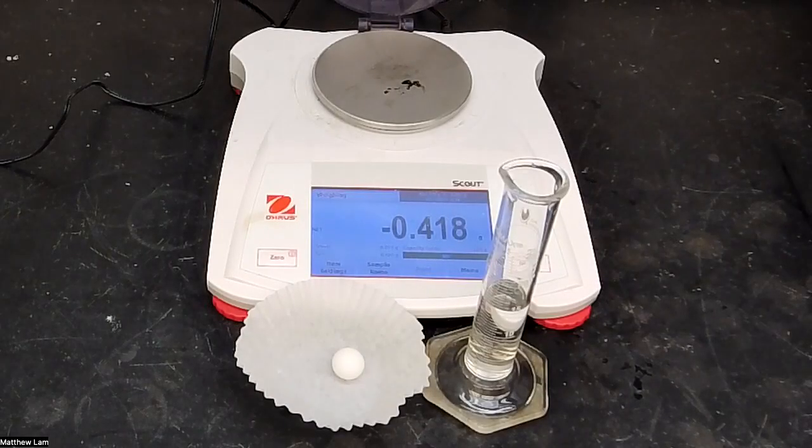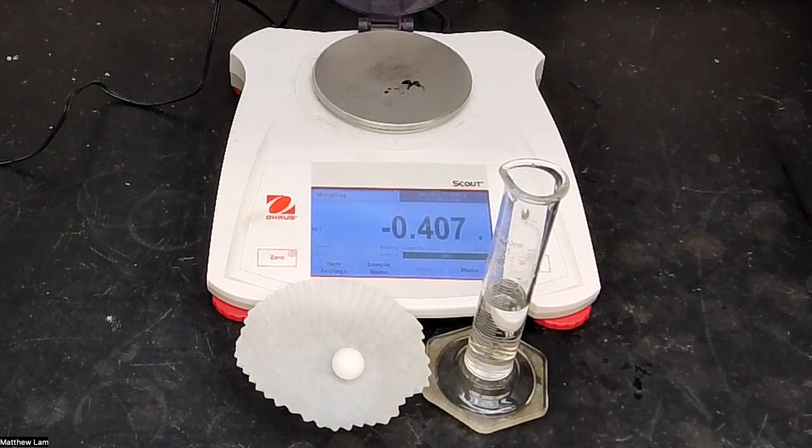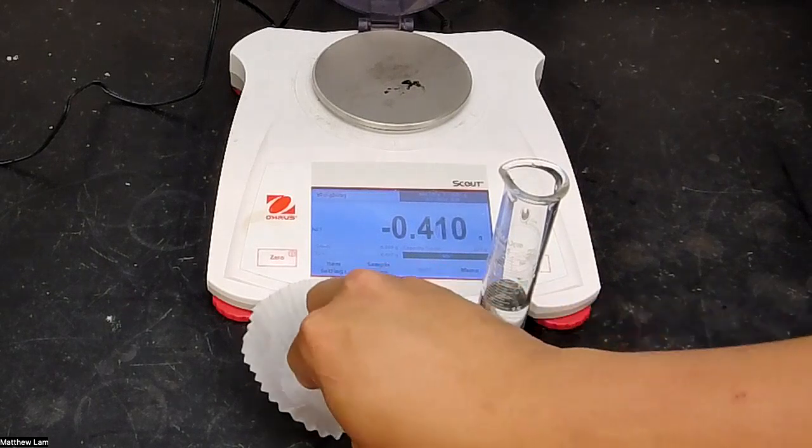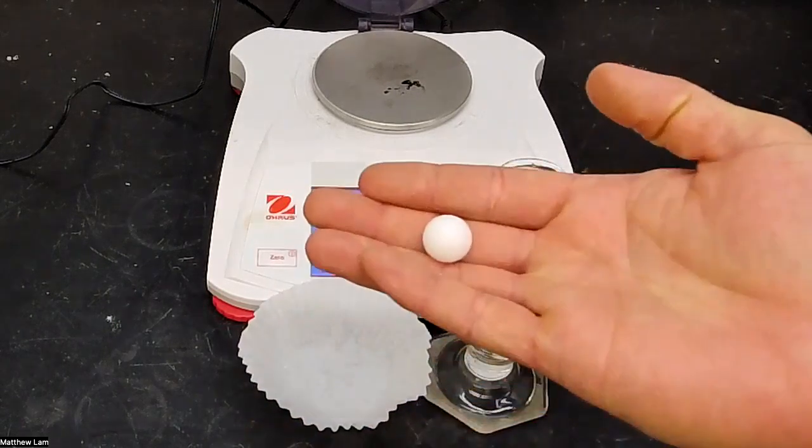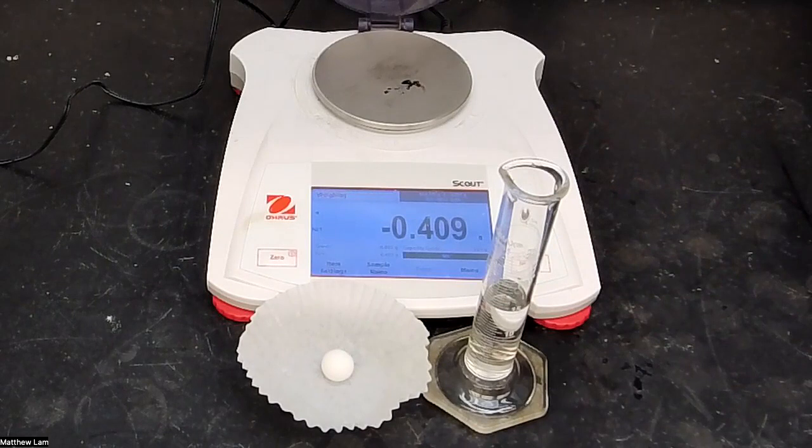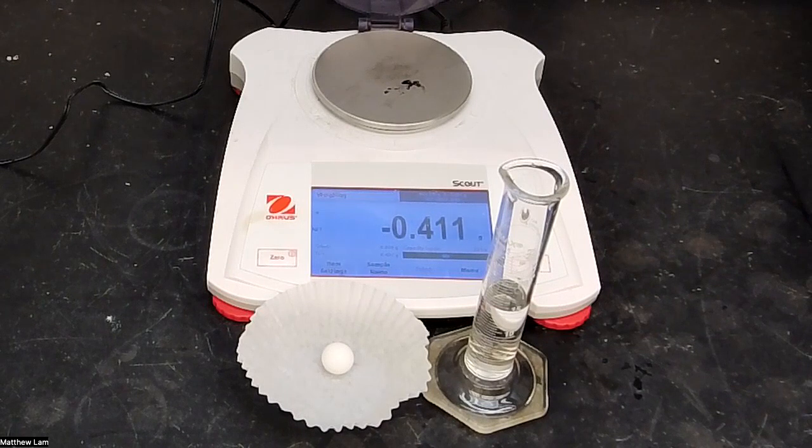Hello, Chem 161 students. Today we're going to be doing the density experiment. Basically, we're going to be determining the density of this Teflon ball right here. To determine that, we're going to take the mass and volume of the ball and determine the density.